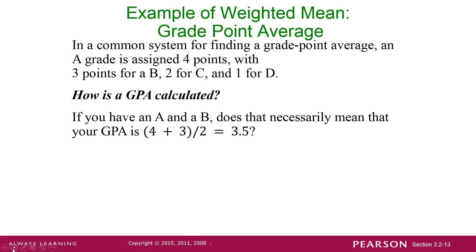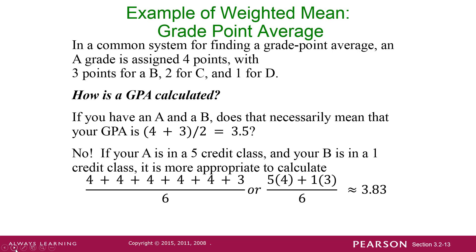Because the A might be worth more than the B depending on what? The credit hours. That's right. So if your A happens to be in a 5 credit hour class and your B is in a 1 credit hour class, you definitely don't want the school giving you a 3.5.